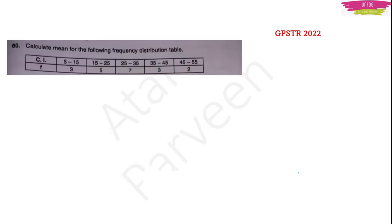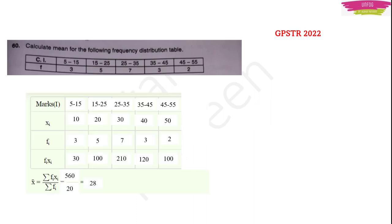Another question from GPSTR 2022 — this was a 3-mark question. Calculate mean for the following frequency distribution. They have given class interval. You have to find Xi first — do upper limit plus lower limit by 2. So 15 plus 5 by 2 gives 10, and 15 plus 25 by 2 gives 40 by 2 equals 20. Then find summation FiXi and summation Fi, and find the mean the way we did it previously. I have solved this GPSTR 2022 question paper — please go and watch that lecture, I will give the link in the description.